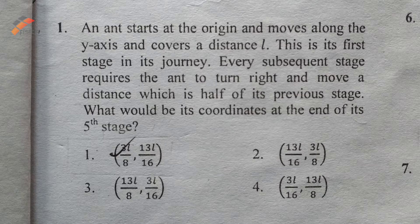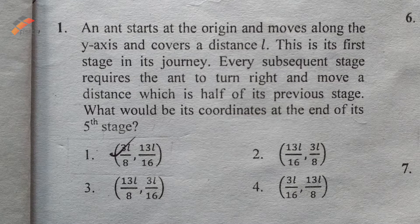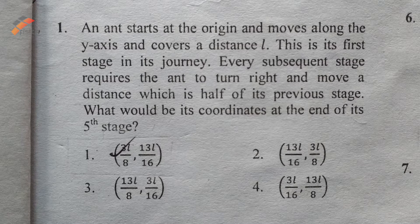An ant starts at the origin and moves along the y-axis, covering a distance L. This is its first stage in its journey. Every subsequent stage requires the ant to turn right and move a distance which is half of its previous stage. What would be its coordinate at the end of its fifth stage?